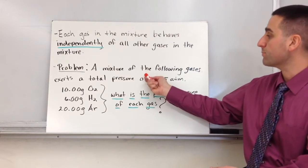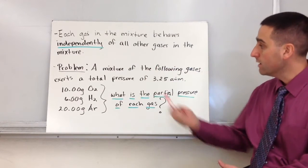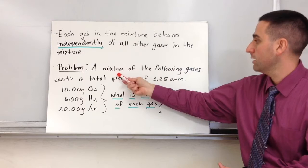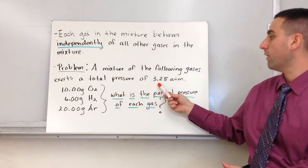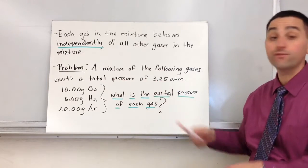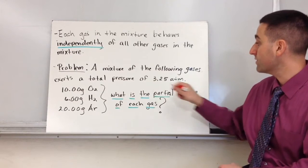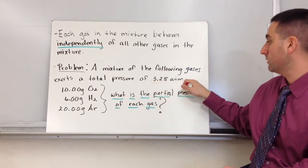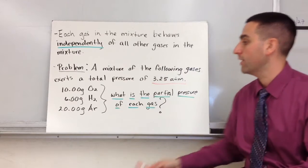Here's a problem I'd like you to try. I'm going to take you through this step by step. We have a gas mixture with the following gases, and the total pressure of all the gases is 3.25 atmospheres or atmospheric pressures. So this is our Ptotal.